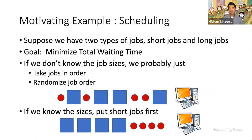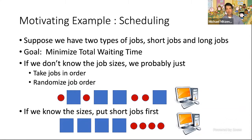Now let's look at another example: scheduling. Suppose we have two types of jobs — short and long — and our goal is to minimize total waiting time. If you don't know job sizes, you might use first-come first-served, or randomize the job order. But if you do know the job sizes, the classic algorithms exercise is to prove that the best thing is to put the short jobs first, minimizing total waiting time by getting short jobs out of the way.